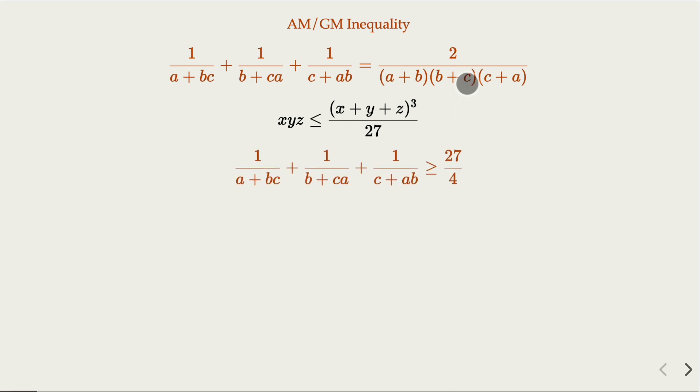And then you get 2 over 8 over 27. Finally, it cancels as 27 over 4. That's another proof.